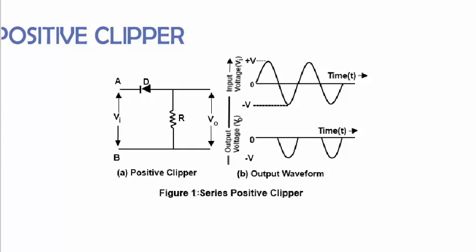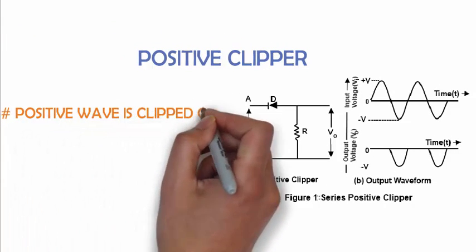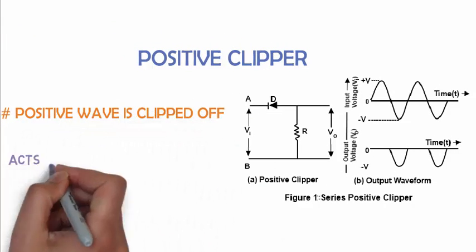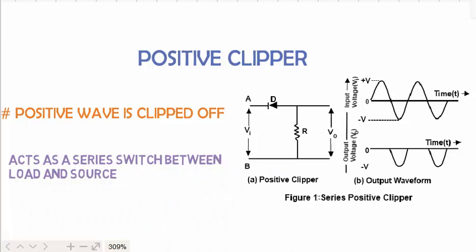During the negative half of the cycle, the polarity is reversed and the input voltage terminal B is positive with respect to A. Due to this, when we move on to the circuit we get a positive sign and the diode acts as a closed switch. An output waveform is made as shown in the figure, and the process repeats itself. From this we can conclude that positive wave is clipped off and it acts as a series switch between load and source.